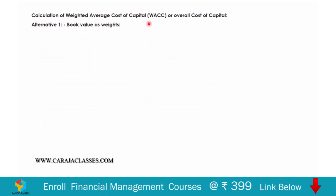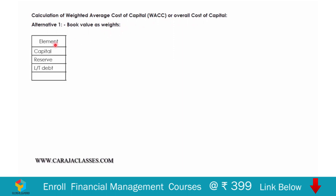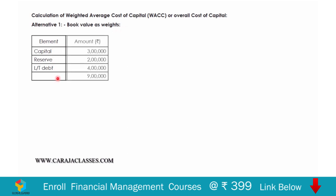Now we begin calculation of weighted average cost of capital, or overall cost of capital. First, we go by book value weights. The elements we consider are: equity capital, reserves, and long-term debt. Short-term debt is ignored. The book values from the question are 3 lakhs, 2 lakhs, and 4 lakhs respectively.